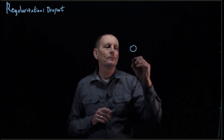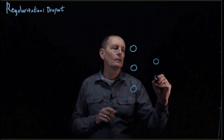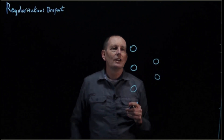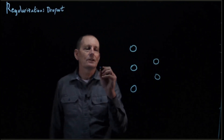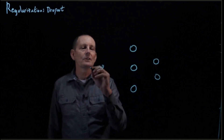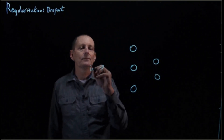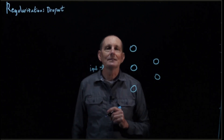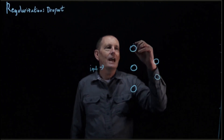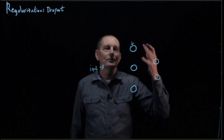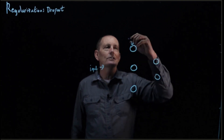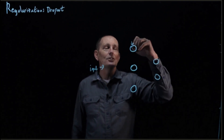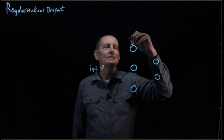For example, we have a neural network which has learned some various things — we've got our input coming in. Let's say we are learning to detect cats, and the neural network has learned to make this neuron, this node, identify whiskers.